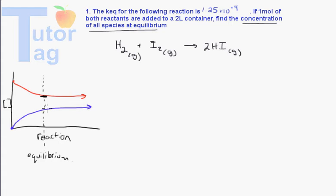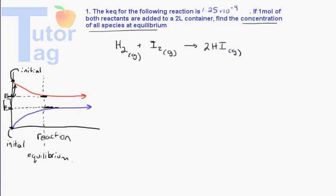Those are the equilibrium points on the graph. The point that it started is called the initial point. It went from some initial to some equilibrium point — we'll call that E — and there was some change, which we'll call C. So there's a difference between the initial and the equilibrium concentrations, called the change. That's where we get the three letters I, C, E for ICE table: Initial, Change, and Equilibrium.